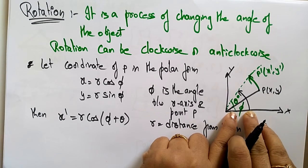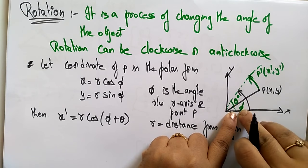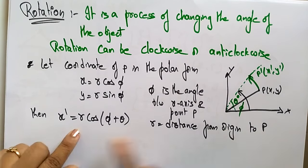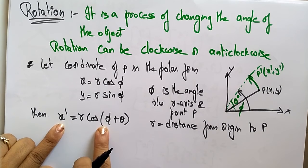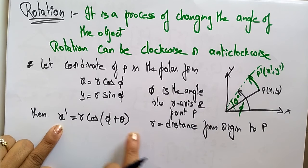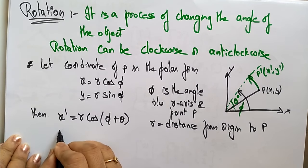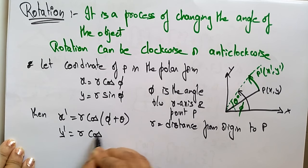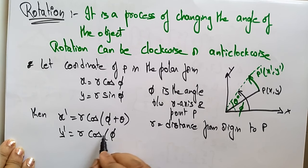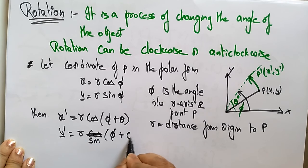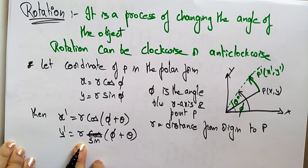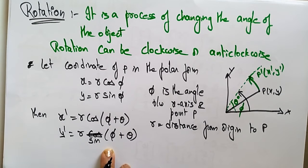So you take phi plus theta. That's why x' = r·cos(phi + theta) and similarly y' = r·sin(phi + theta). For the x-axis we always take cosine and for the y-axis we always take sine — you already learned this in geometry.